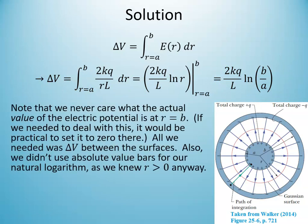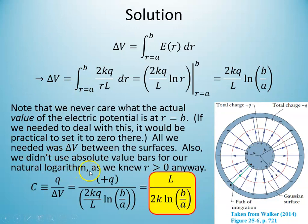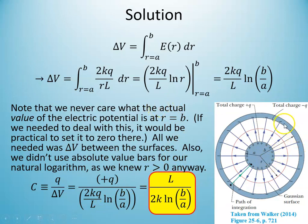Now for the capacitance: C = Q/ΔV = Q / [(2kQ/L)·ln(B/A)]. The Q's cancel, and we get C = L/(2k·ln(B/A)), where B is the inner radius of the outer cylinder, A is the radius of the inner cylinder, and k = 1/(4πε₀). We've found the capacitance of a cylindrical capacitor. Spherical capacitors are left as homework.